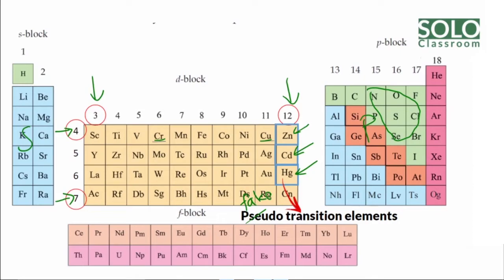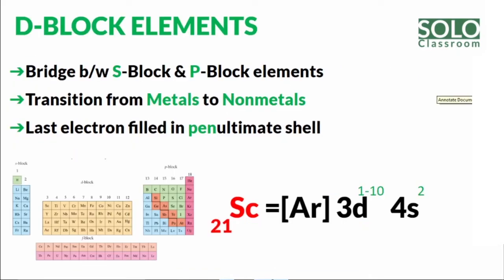The properties of D Block elements do not fully apply to zinc, cadmium, and mercury. Because they do not show the typical transition element properties, they are called pseudo-transition elements — or fake transition elements.